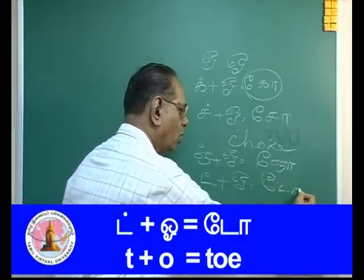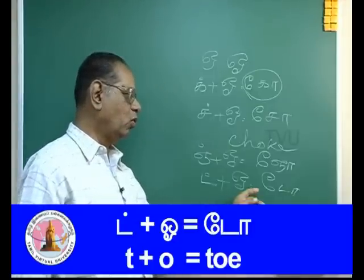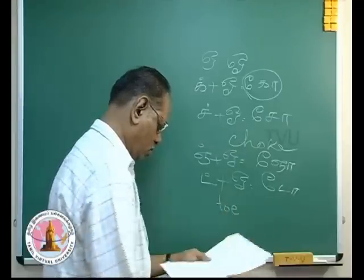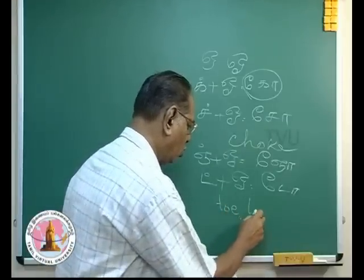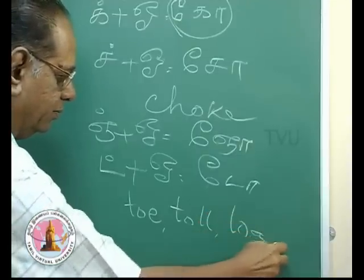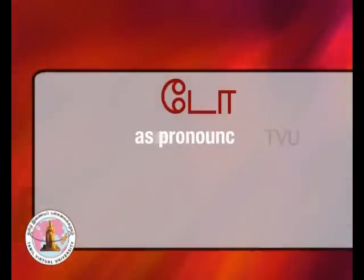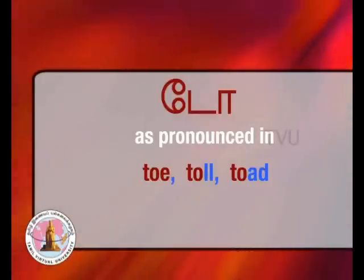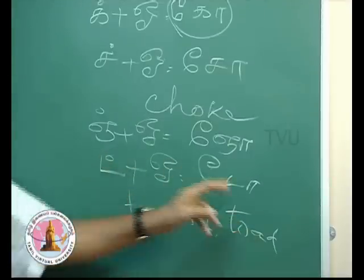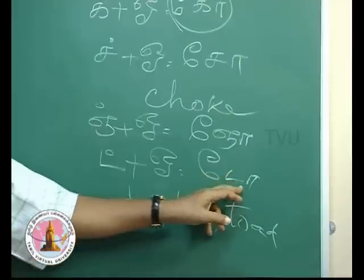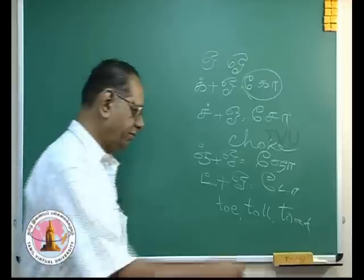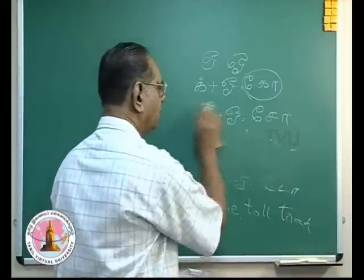The next is the consonant plus O giving 'To'. As you have in 'Tole' and 'Toad' — this is 'To'. So we have Ko, Cho, Nyo, To, and then you have another nasal. Can you remember what it is?